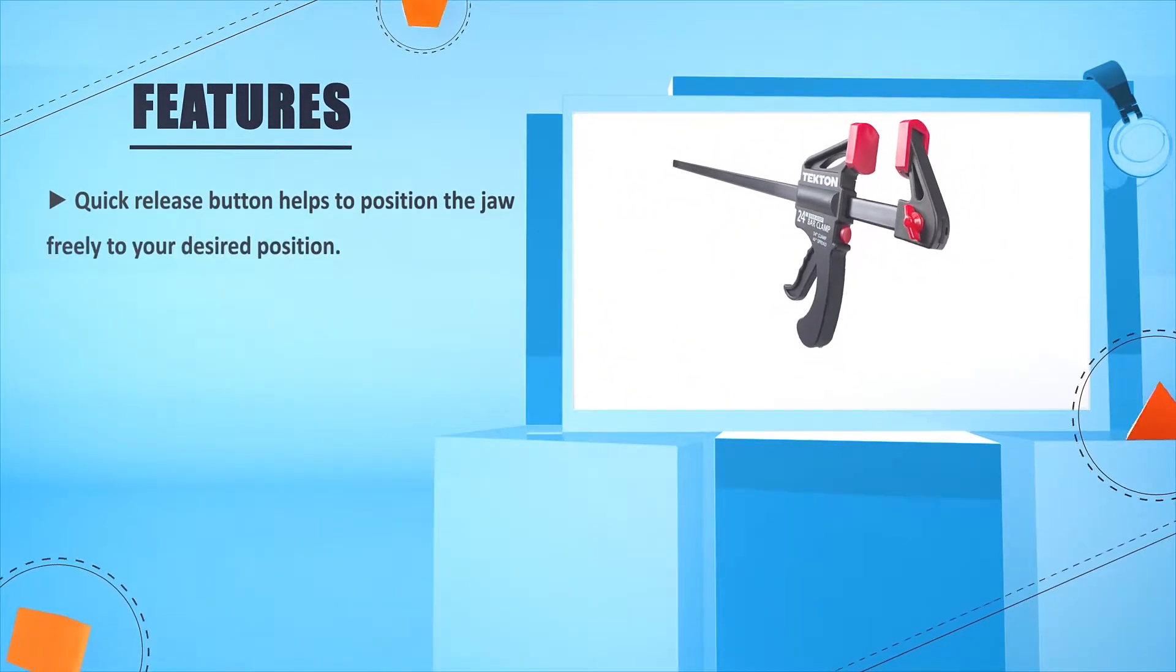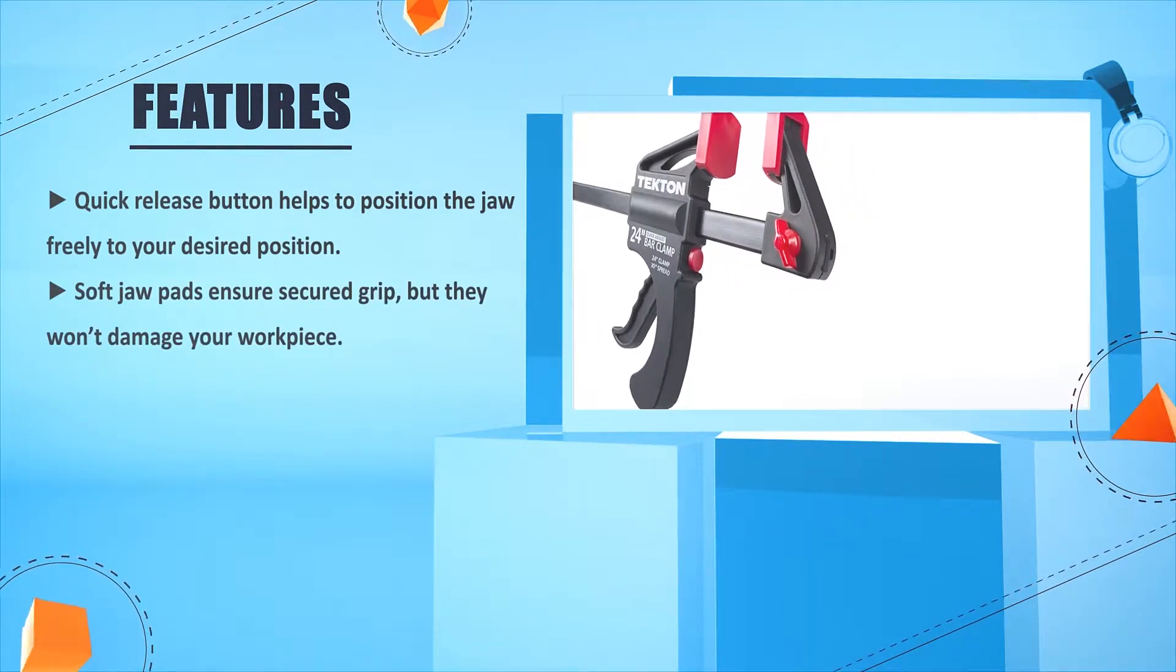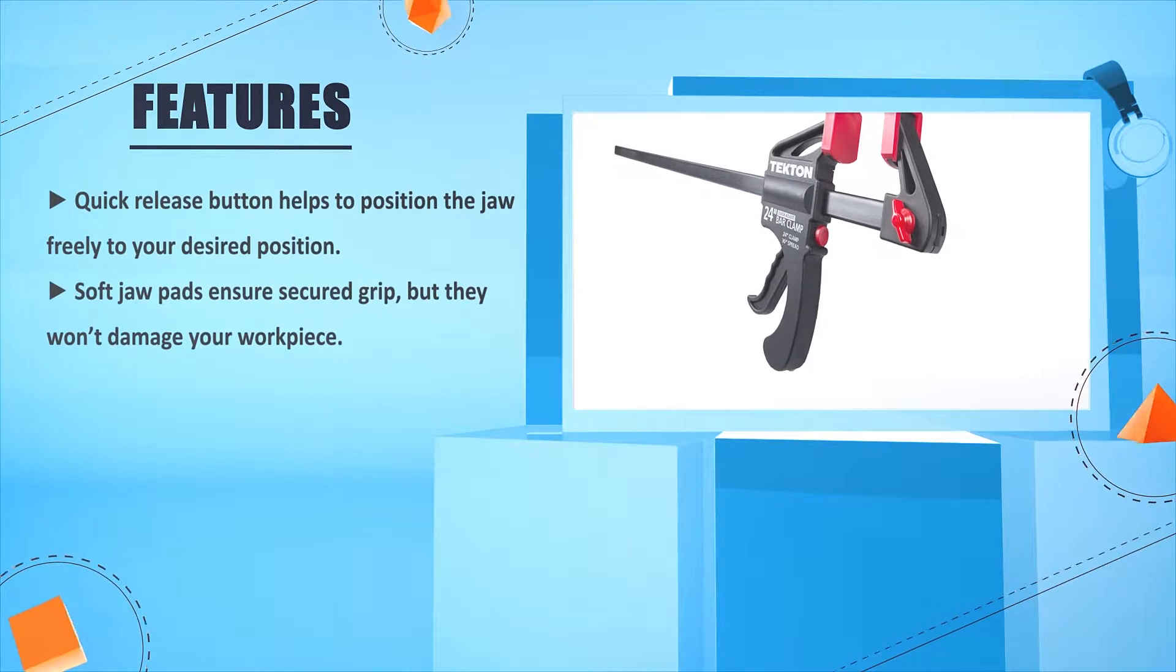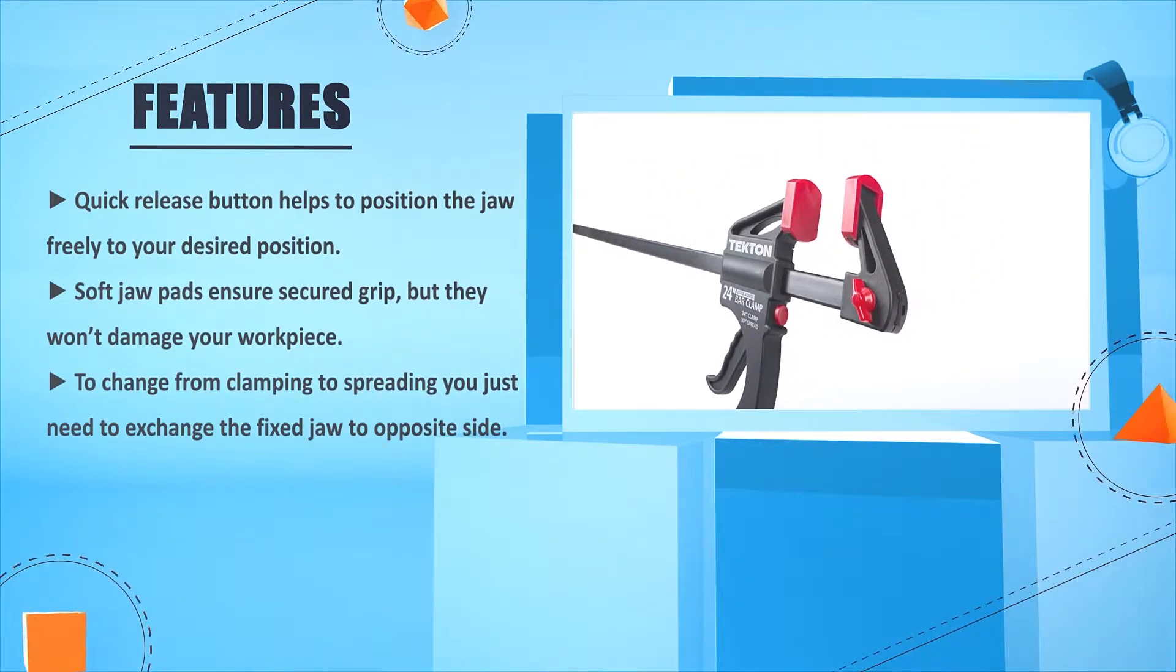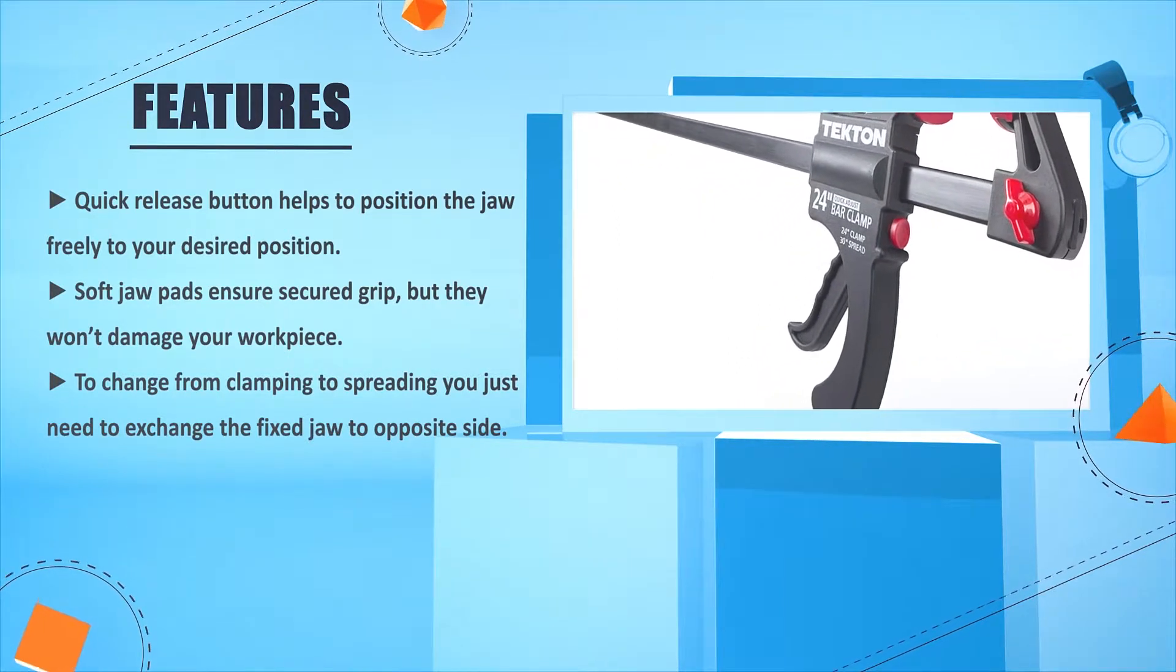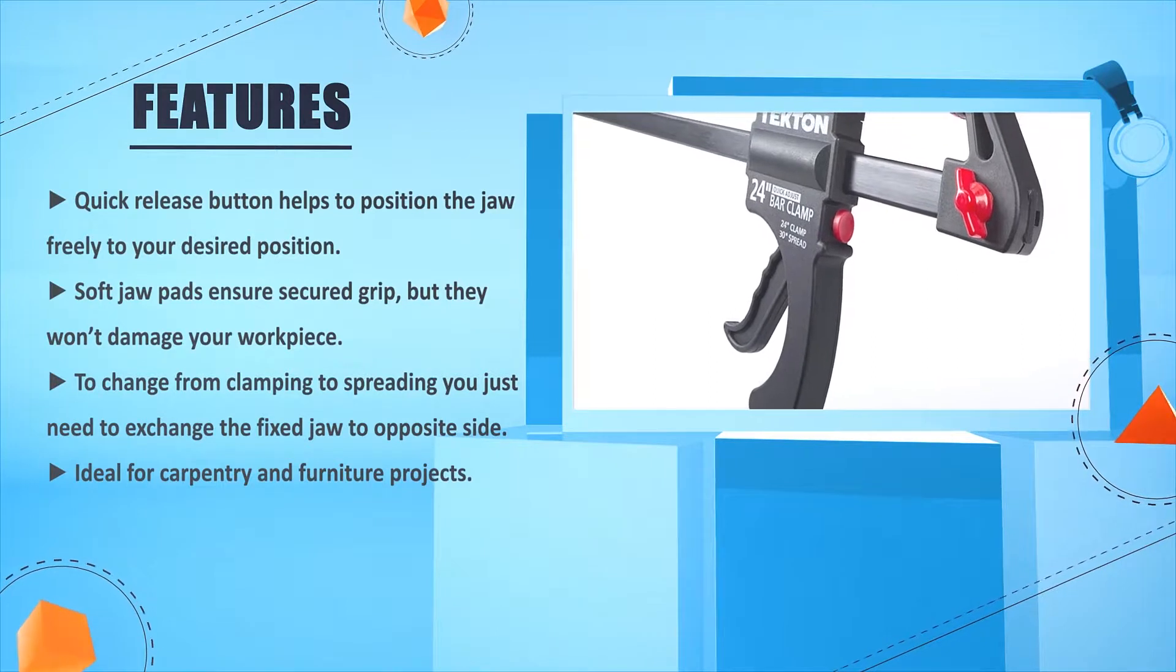Quick release button helps to position the jaw freely to your desired position. Soft jaw pads ensure secure grip but won't damage your workpiece. To change from clamping to spreading you just need to exchange the fixed jaw to opposite side. Ideal for carpentry and furniture projects.